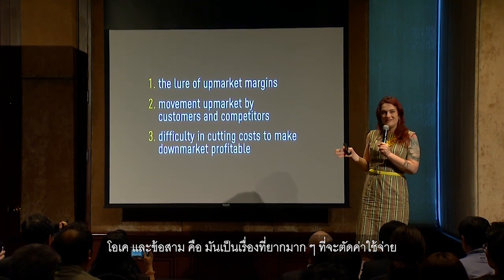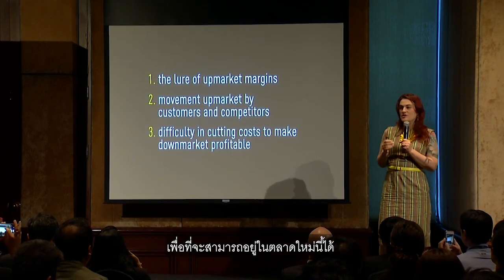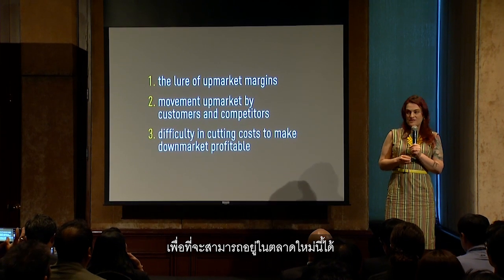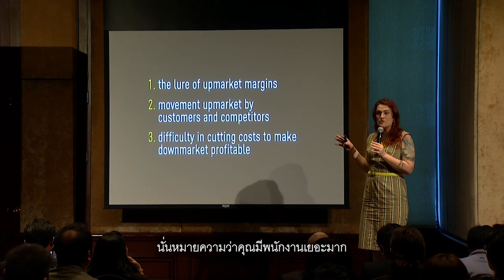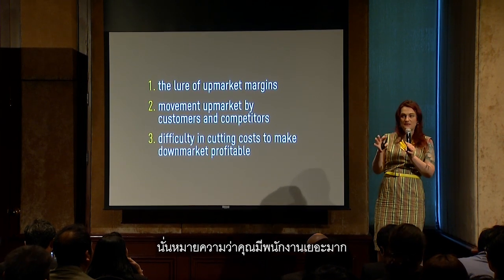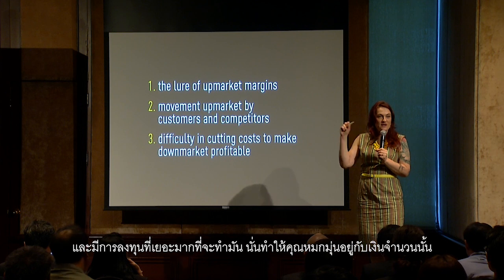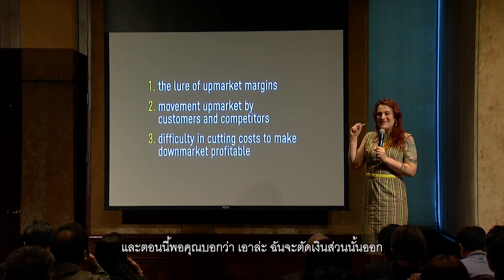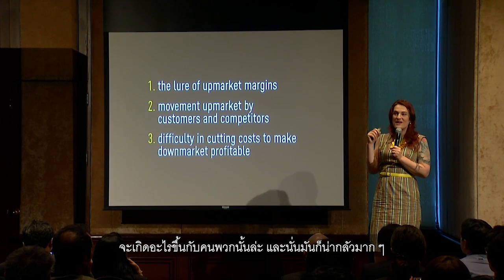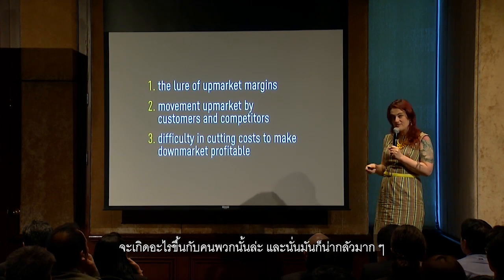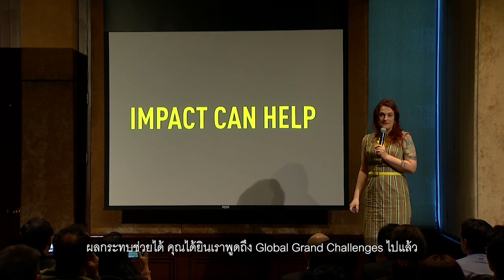The third barrier is that it's very difficult to cut costs in order to play in a new marketplace. If you have a company entirely geared around Industry 2.0, that means you have a lot of human beings and investments that make you addicted to that money. When you say 'I'm going to give that up,' you have to ask what happens to all those people — and that's really terrifying.